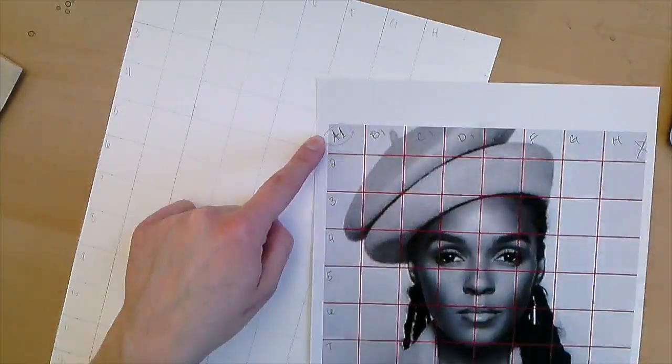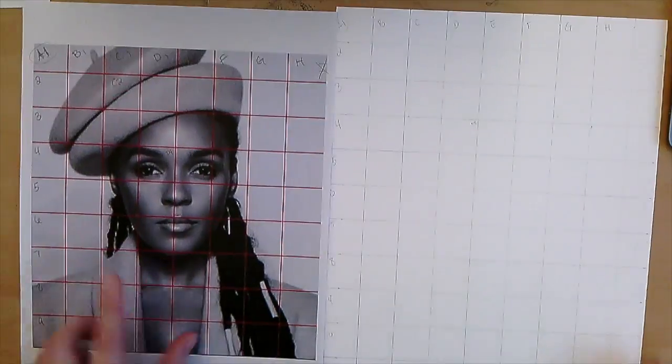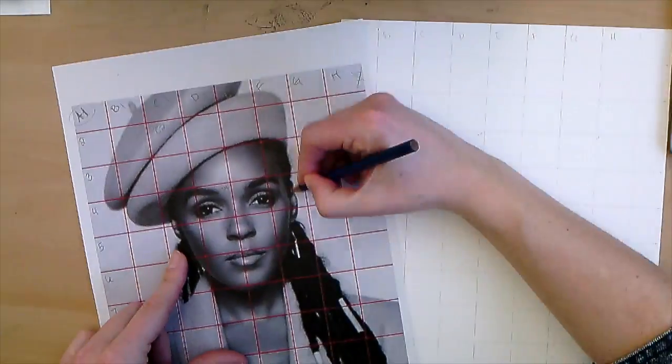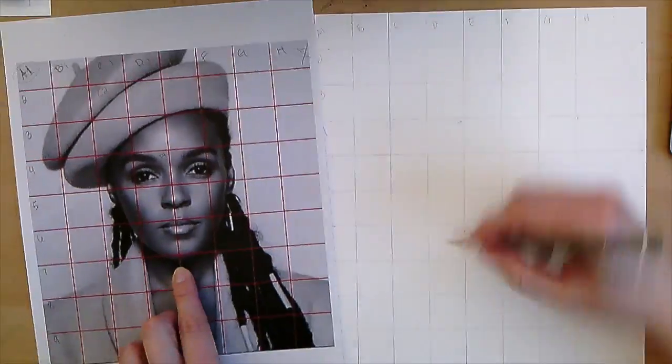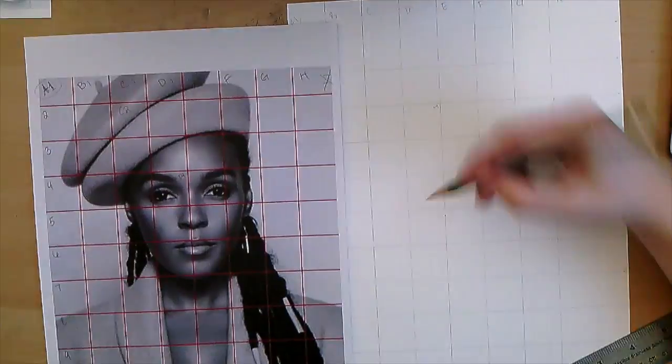Here comes my Janelle Monae drawing. I have my grids with everything labeled A through H across the top and 1 through 11 at the bottom. Right now I'm plot pointing where the bottom of my chin is.